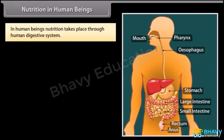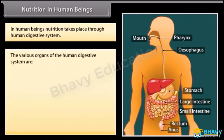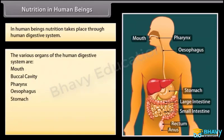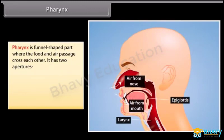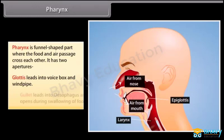Nutrition in Human Beings. In human beings, nutrition takes place through the human digestive system. The various organs of the human digestive system are: Mouth, Buccal cavity, Pharynx, Esophagus, Stomach, Small intestine, Large intestine, Rectum, and Anus.